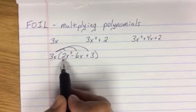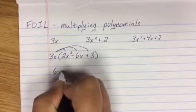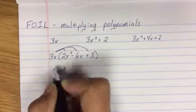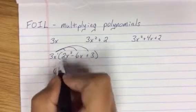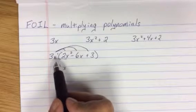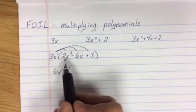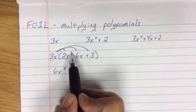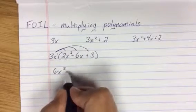So 3x times 2x² gives us 6x³. Remember, when exponents multiply, they add. So one x to the first power times x to the second, these guys add. The sign drops.